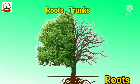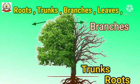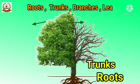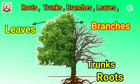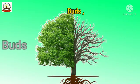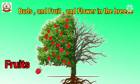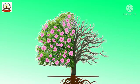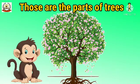Roots, trunks, branches leaves, branches leaves. Roots, trunks, branches leaves, branches leaves. Birds and fruits and flowers in the breeze. Those are the parts of trees.